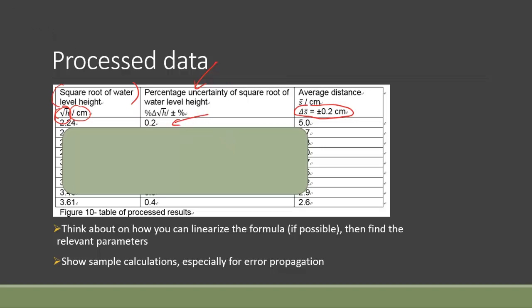In a case where your dependent variable cannot be measured directly, for example if I want to find the density as my dependent variable, I probably have to measure the mass and volume first, and therefore I can calculate each trial's density and put it into the process data.